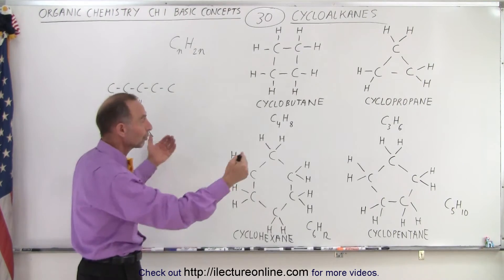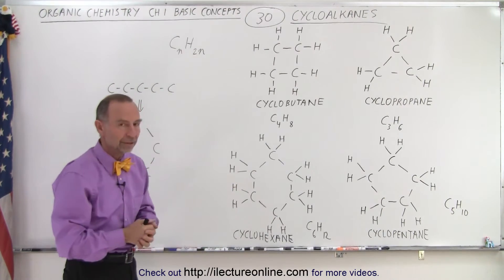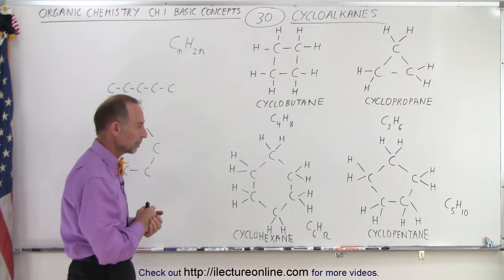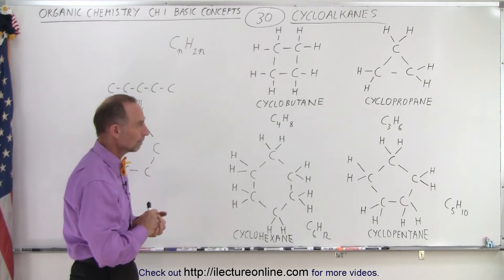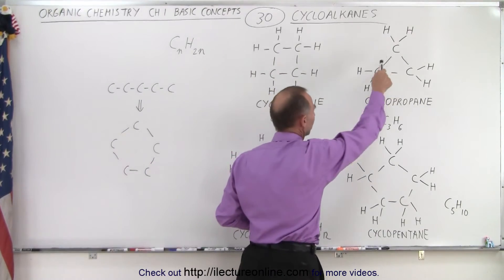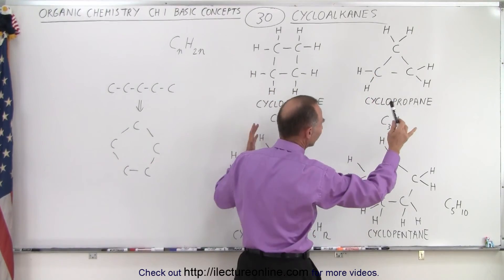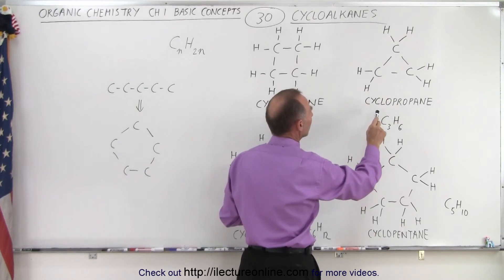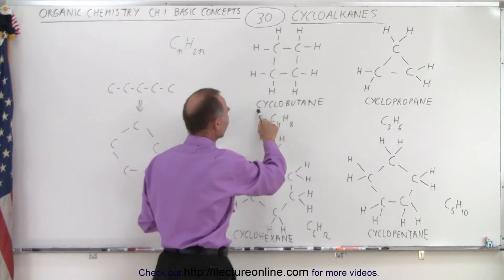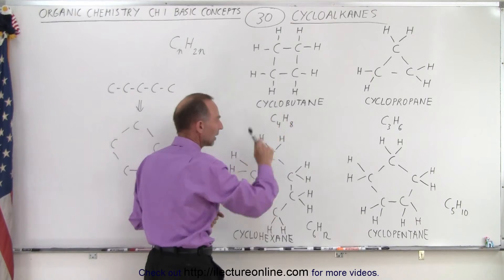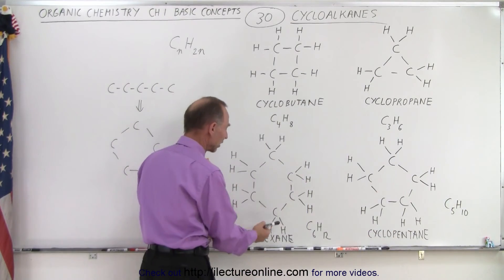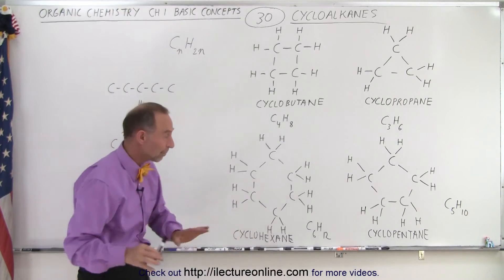Of course we have all kinds of other groups that will attach and form different kinds of molecules, and we'll talk about some of the more common molecules in the videos to come. When we have three carbons in a ring we have cyclopropane, four gives us cyclobutane, five gives us cyclopentane, and six gives us cyclohexane.